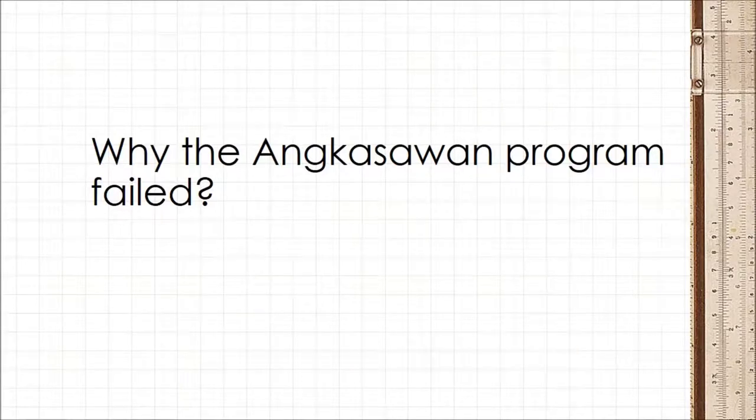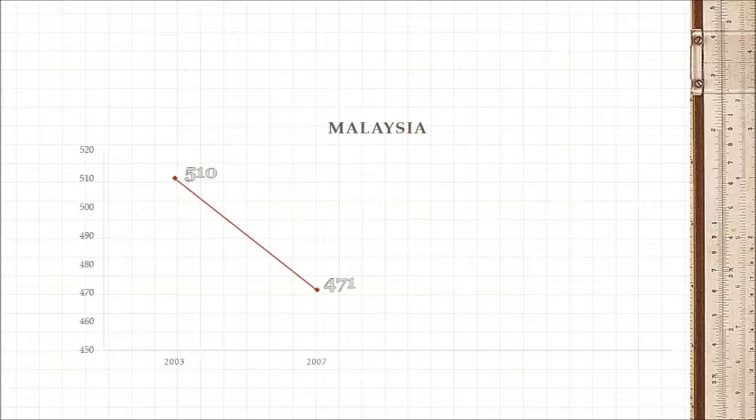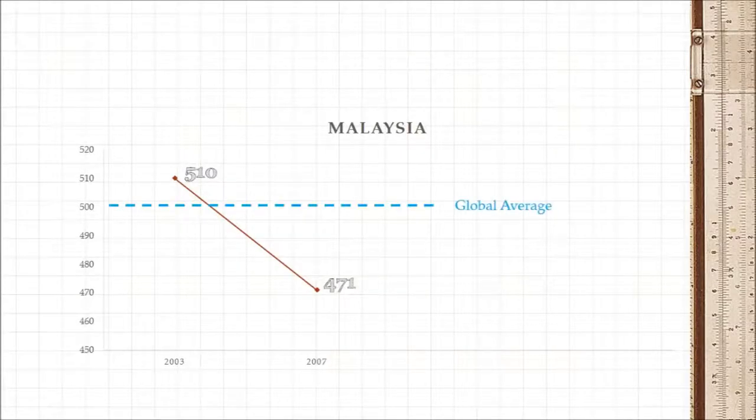In 2003, the average score of Malaysian students in the Trends in International Math and Science study was 510. In 2007, that number slumped to 471, slightly below the global average.